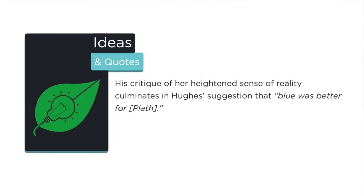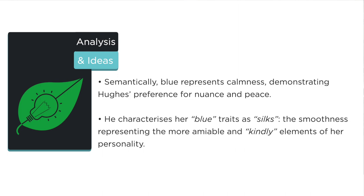The final example: Hughes says 'Blue is better for you.' This is unusual because there have been lots of reds and whites, and suddenly blue appears. Semantically, blue represents calmness, demonstrating his preference for nuance and peace. But blue can also represent sadness and melancholy. There are lots of different ways to interpret what blue means here, and you can interpret it based on what you want to argue in your essay. Perhaps it was never going to be possible for Plath to be a happy-go-lucky person, but when they met there was still some melancholy — just not the violent red rage, and not as self-destructive.